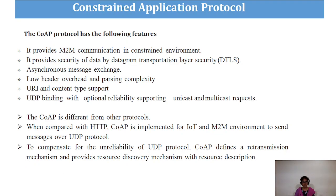CoAP has several features: it provides M2M communication within constrained environments; provides security for data through DTLS (Datagram Transport Layer Security); supports asynchronous message exchange; has low header overhead and parsing complexity; supports URI content; and uses UDP binding with optional reliability supporting unicast and multicast requests. Compared with HTTP, CoAP is implemented for IoT and M2M environments using UDP. To compensate for the unreliability of UDP, CoAP defines a retransmission mechanism and provides resource and discovery mechanisms with resource description.